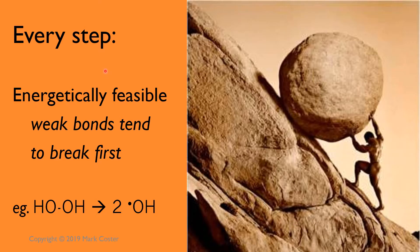Rule number two: in every step of our mechanism we want to do energetically feasible reactions. Energetically feasible reactions are ones where weak bonds tend to break before strong bonds. A general rule is that bonds between electronegative elements — like oxygen, bromine, chlorine, and fluorine — when two electronegative elements are bonded together, that is generally going to be a weak bond. For example, an oxygen-oxygen bond like in hydrogen peroxide is a weak bond and can break to make two hydroxyl radicals. Nitrogen-nitrogen and oxygen-oxygen bonds will break readily.